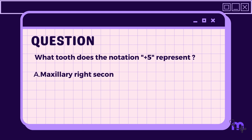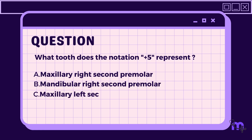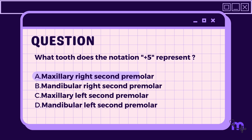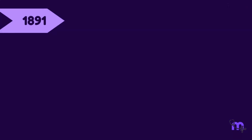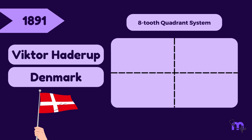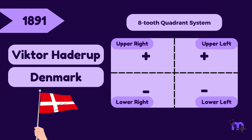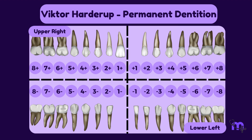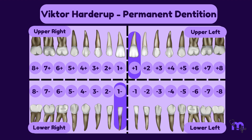Quiz: What tooth does the notation '+5' represent? A) Maxillary right second premolar, B) Mandibular right second premolar, C) Maxillary left second premolar, D) Mandibular right second premolar. The correct answer is option A: maxillary right second premolar. In 1891, Victor Haderup from Denmark introduced a modified version of the eight-tooth quadrant system, which incorporated the use of plus and minus symbols to distinguish between upper and lower quadrants, as well as right and left quadrants. A notation like '+1' signifies the upper left central incisor, while '1−' represents the lower right central incisor.